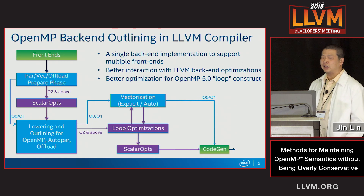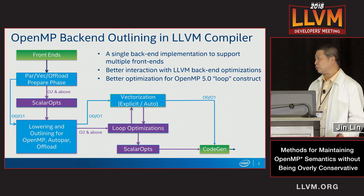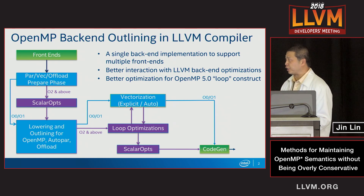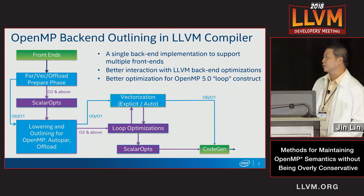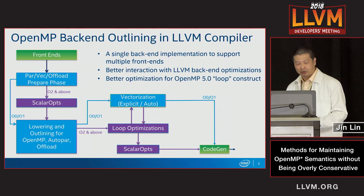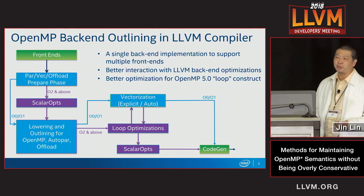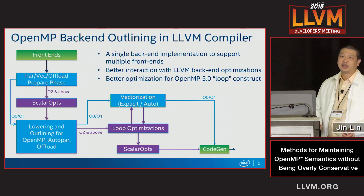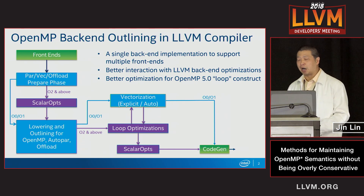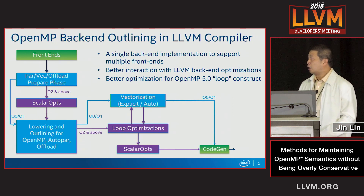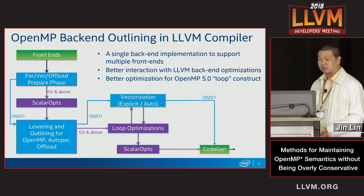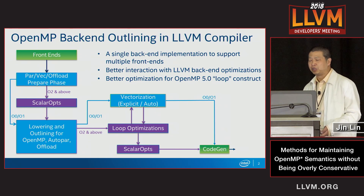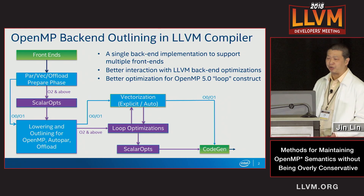The back-end outlining can also have better interaction with every back-end optimization. For example, in the back-end outlining, we can preserve the alias information for the outlining functions. And lastly, the back-end outlining can have better optimization for the loop construct in OpenMP 5.0.